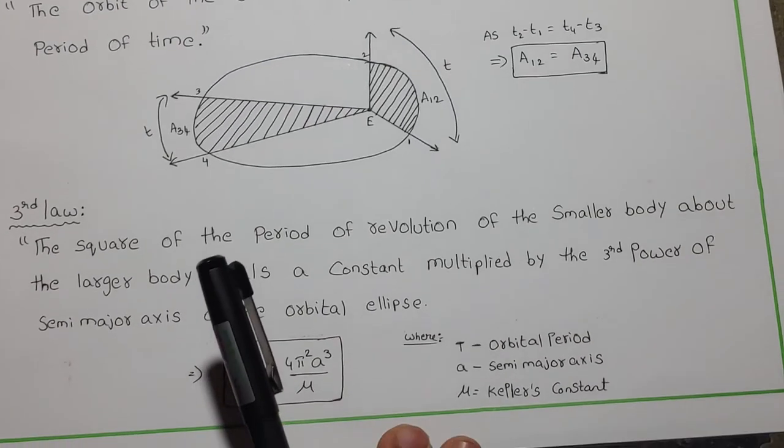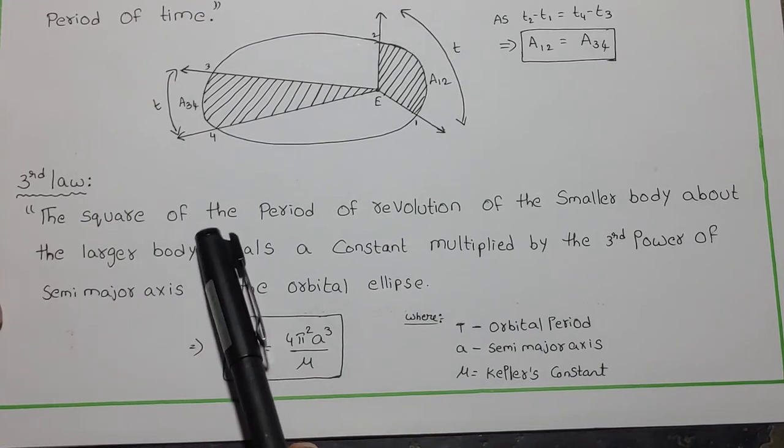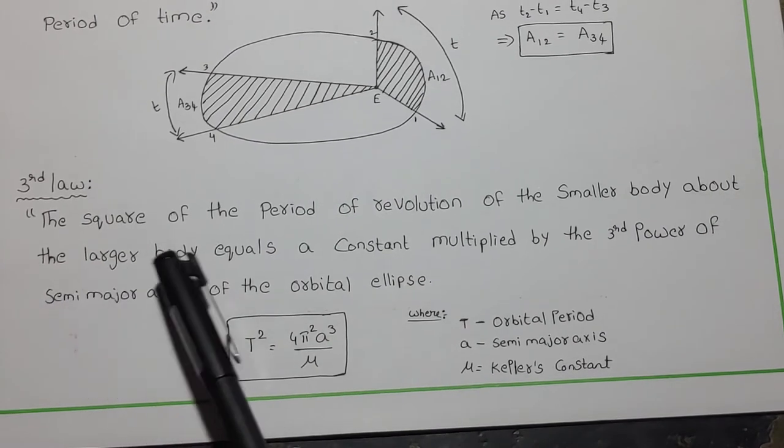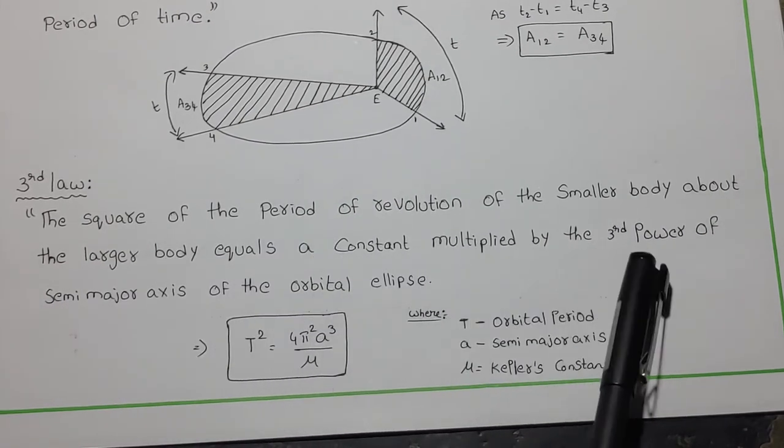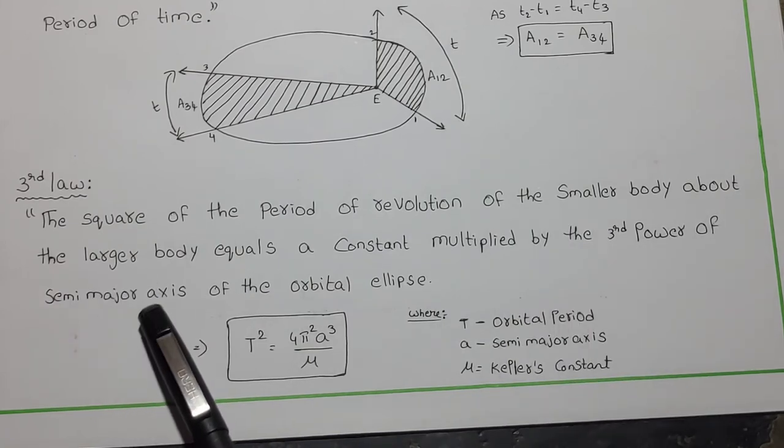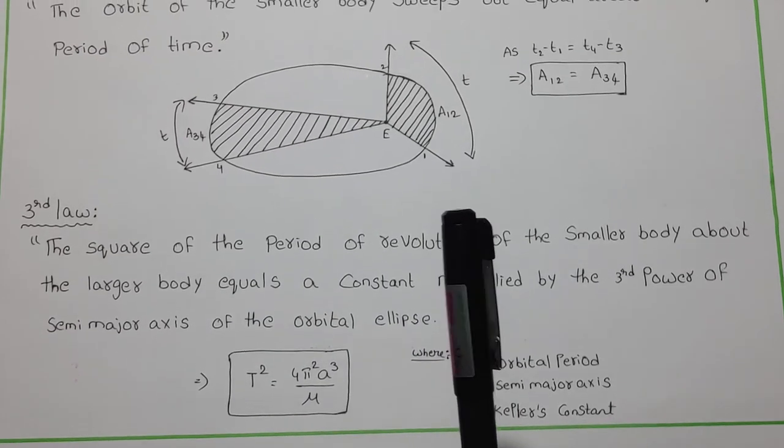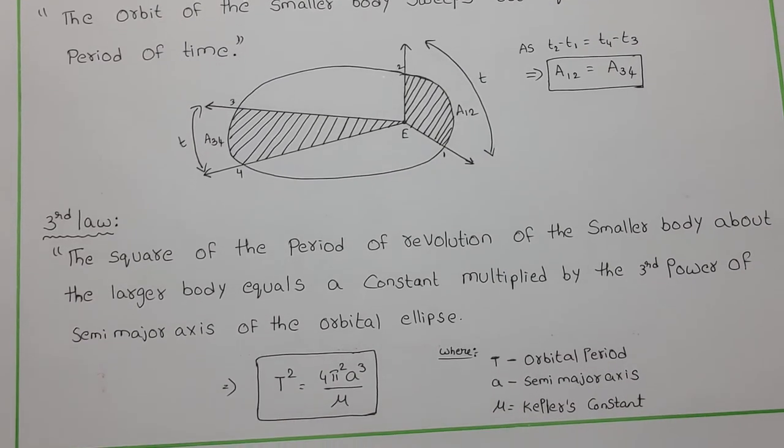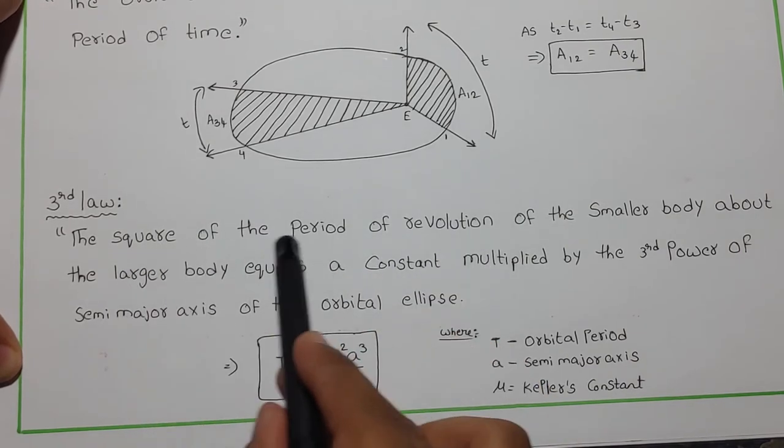Now let us see about the third law of Kepler. That is: the square of the period of revolution of the smaller body about the larger body equals a constant multiplied by the third power of the semi-major axis of the orbital ellipse.